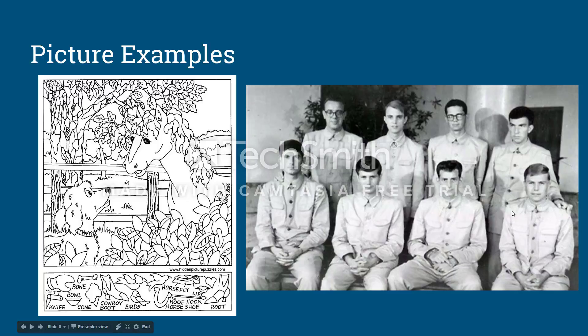Here you see two pictures. On the left is an example of a children's puzzle where objects are hidden throughout a larger picture for children to find. On the right is an example of the pictures of defectors in the Korean War. If you look closely at the hands of the man sitting second from the right, you can see that he is actually flipping off the camera, signifying that they had not actually defected to the Korean side.